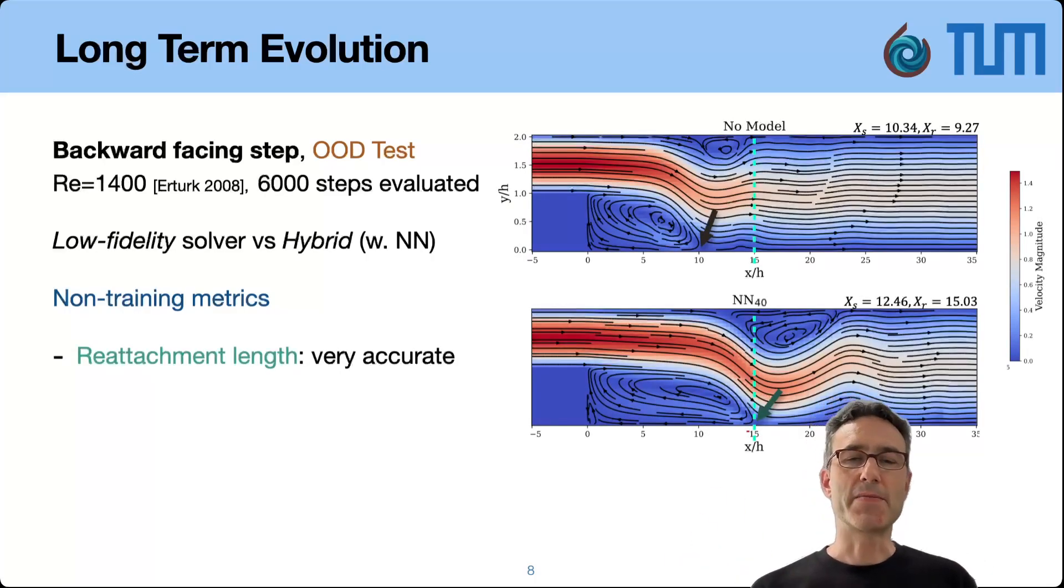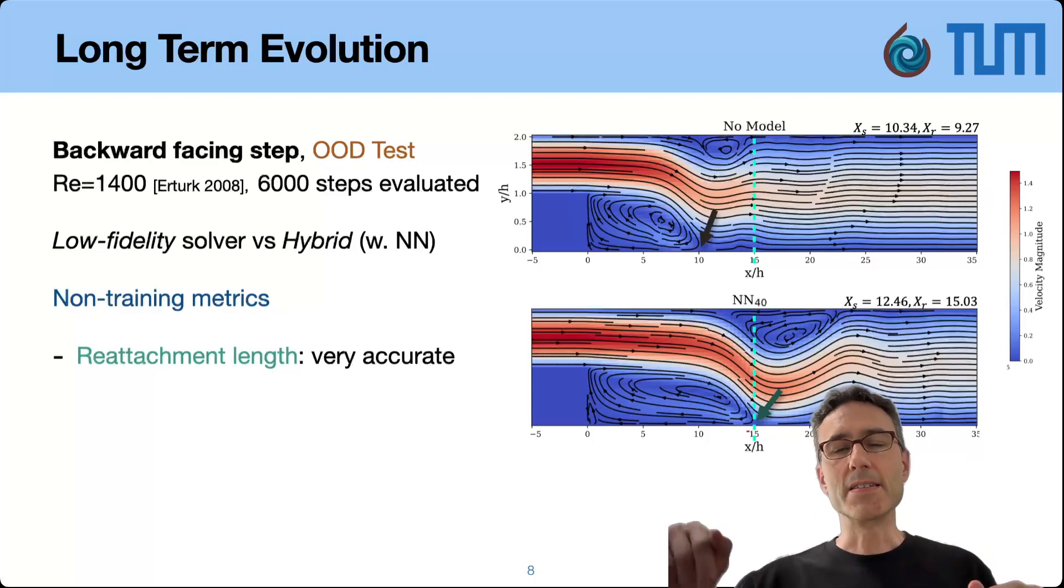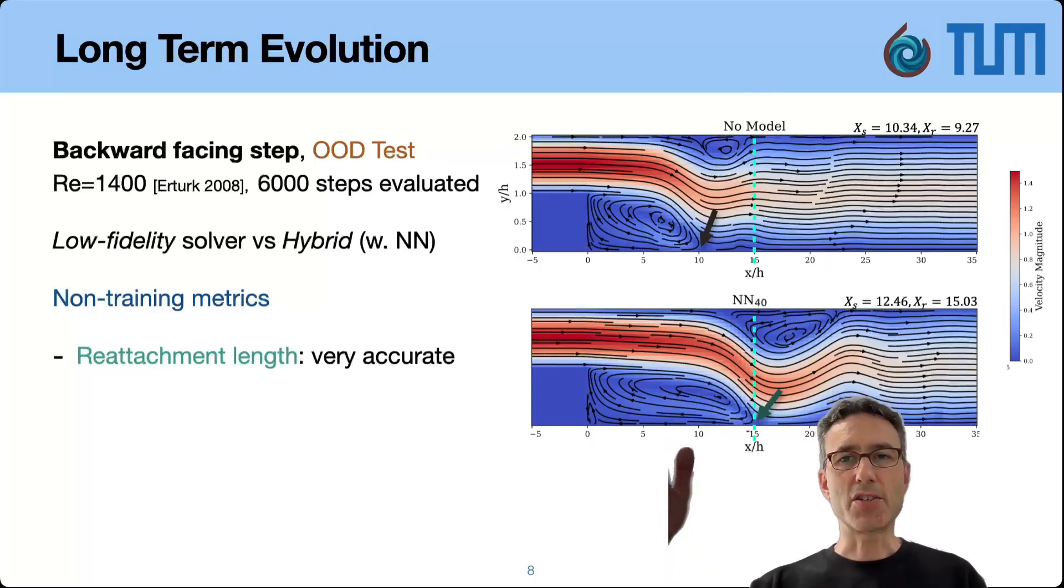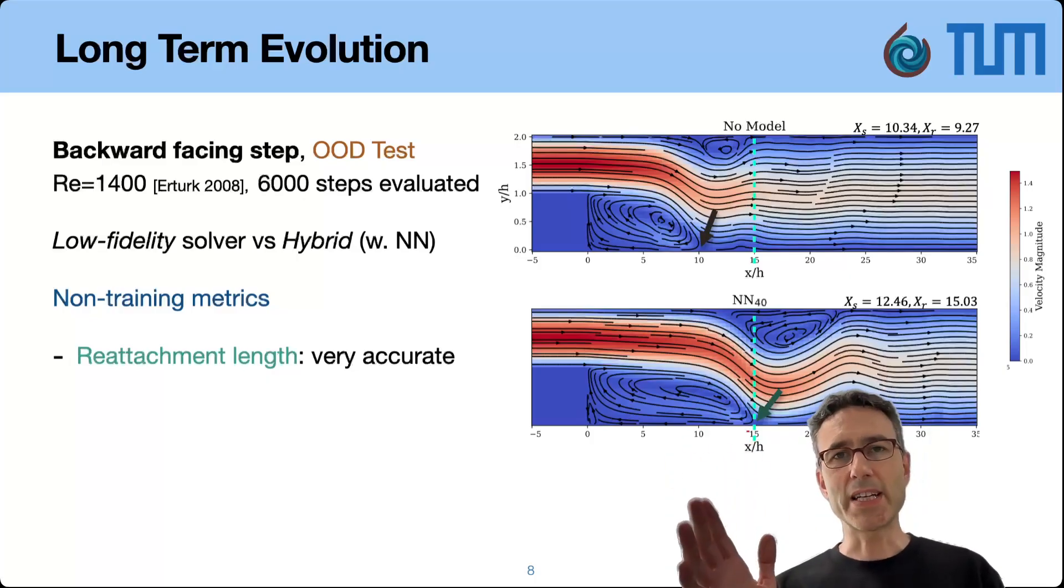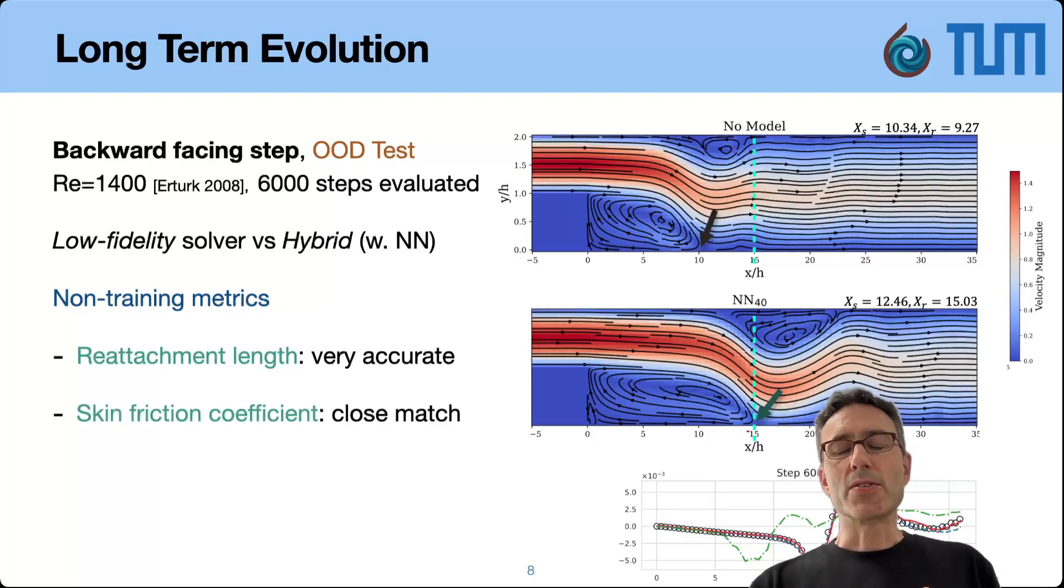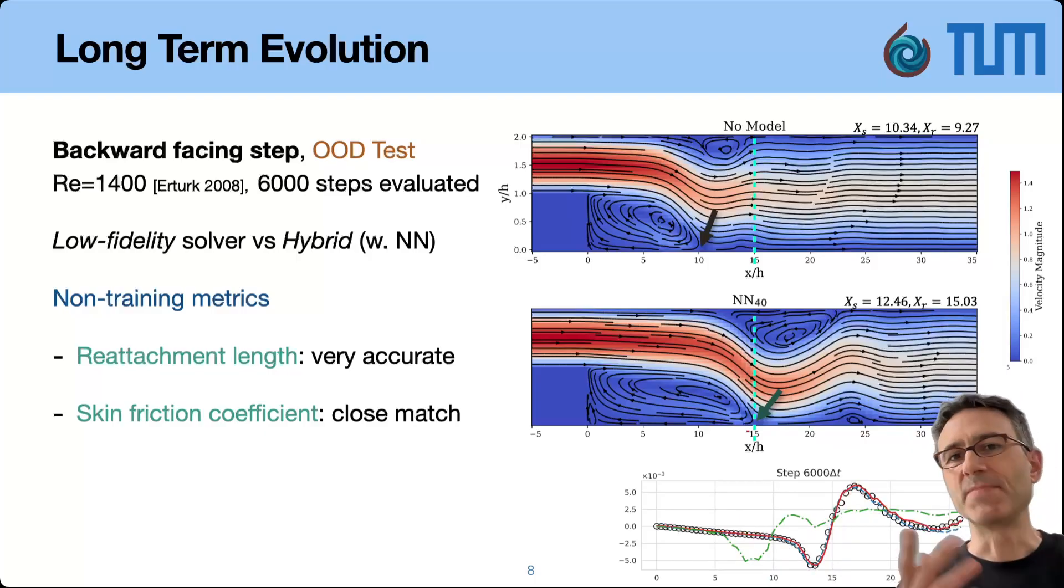We're comparing here the low fidelity solver, meaning something that's intentionally unresolved, compared with a hybrid so network and solver, so it stays in the loop and we're evaluating things that were not part of the training. So one interesting thing here for the backward facing step, some of you might be familiar with this, it's the reattachment length. So it's from the vortex where does it hit in terms of zero x velocity the lower plane, it's highlighted here in green for the reference. And as you can see at the top the low fidelity solver by itself is way too short, doesn't get this right, whereas the hybrid solver at the bottom is actually very accurate, comes very close to the reference. And there's no average over a long time period. The actual flows are very fluctuating and the strain on summer quite interesting but this is really the emergent long-term behavior that matches the reference very accurately.